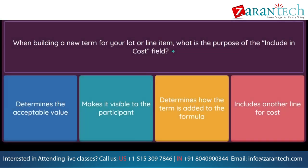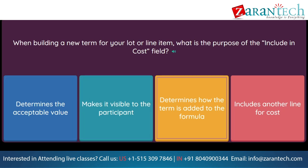Question: When building a new term for your lot or line item, what is the purpose of the include in cost field? Option 1: determines the acceptable value. Option 2: makes it visible to the participant. Option 3: determines how the term is added to the formula. Option 4: includes another line for cost.